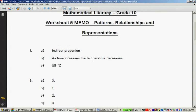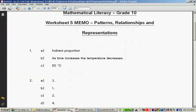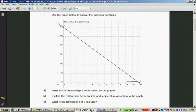What kind of a relationship is represented by the graph? The answer is indirect proportion. Let's quickly recap. Indirect proportion, as one increases, so the time increases, the temperature will decrease. So that is an indirect proportion.